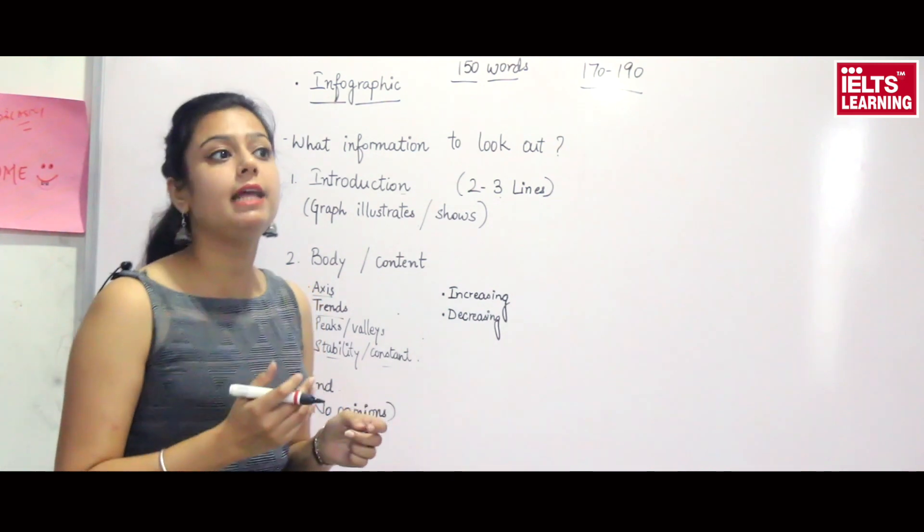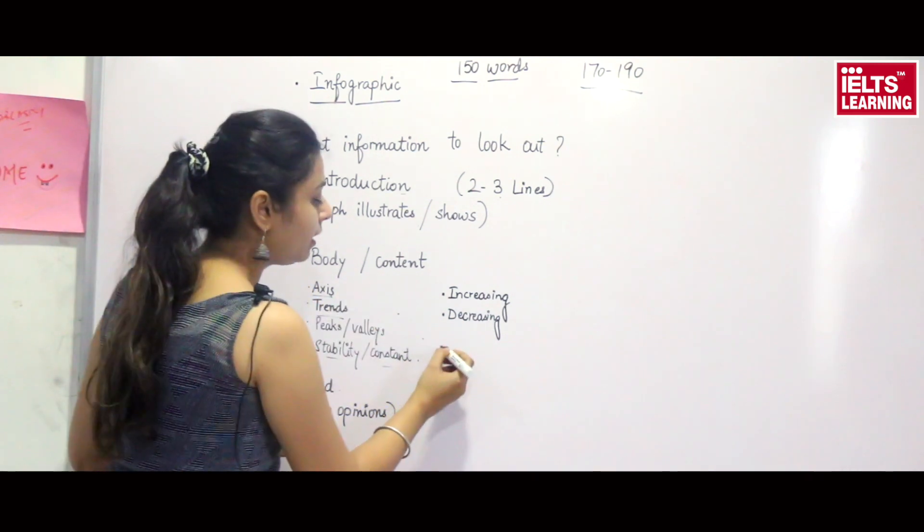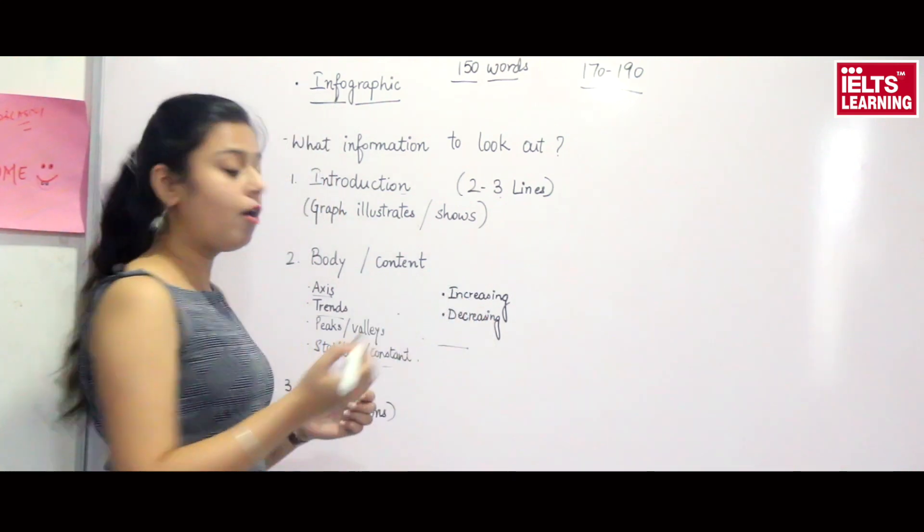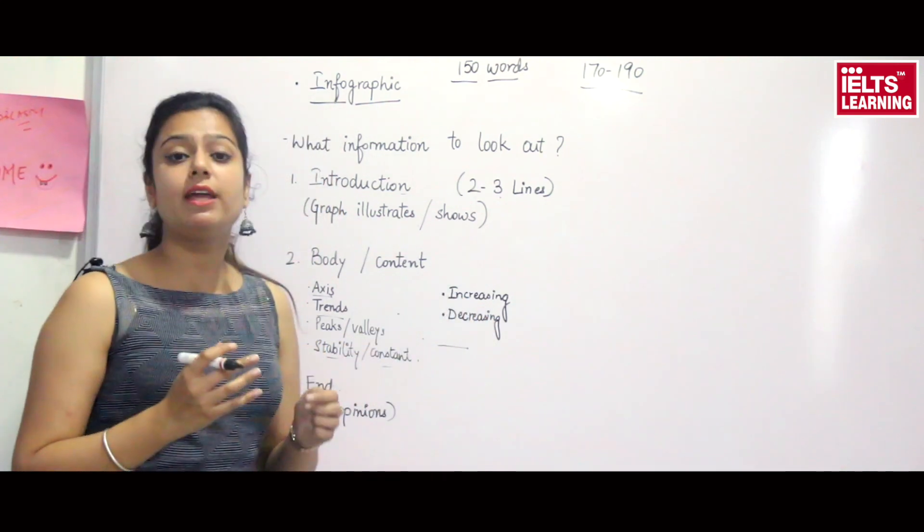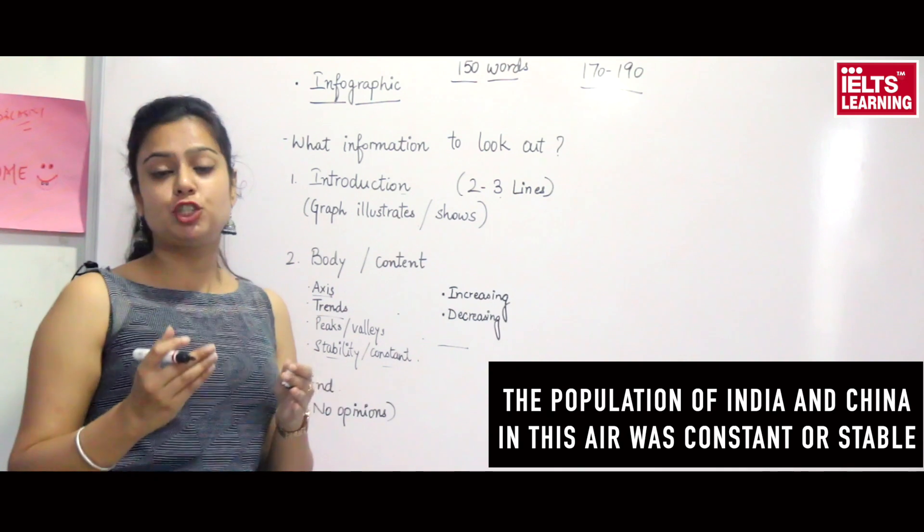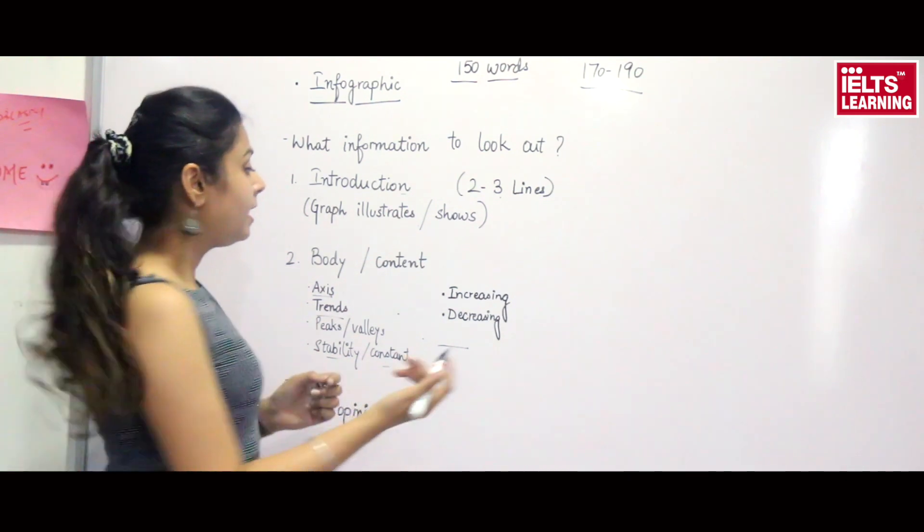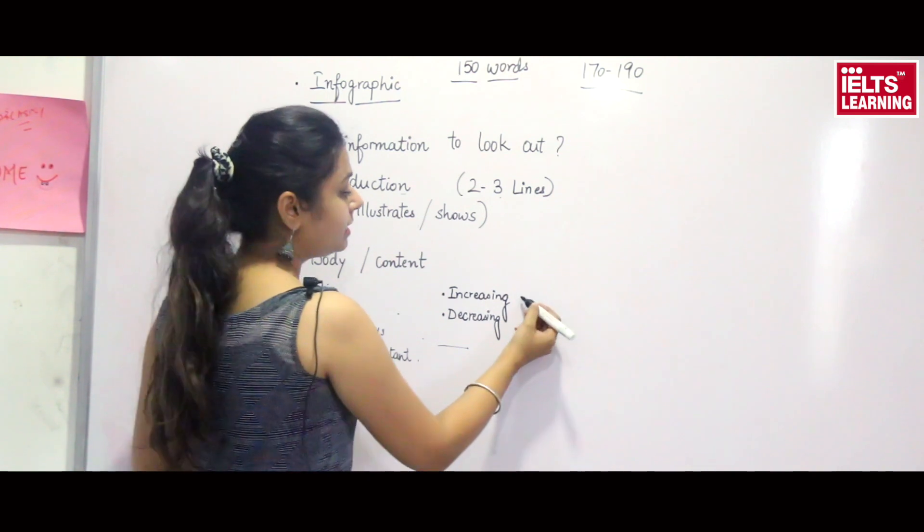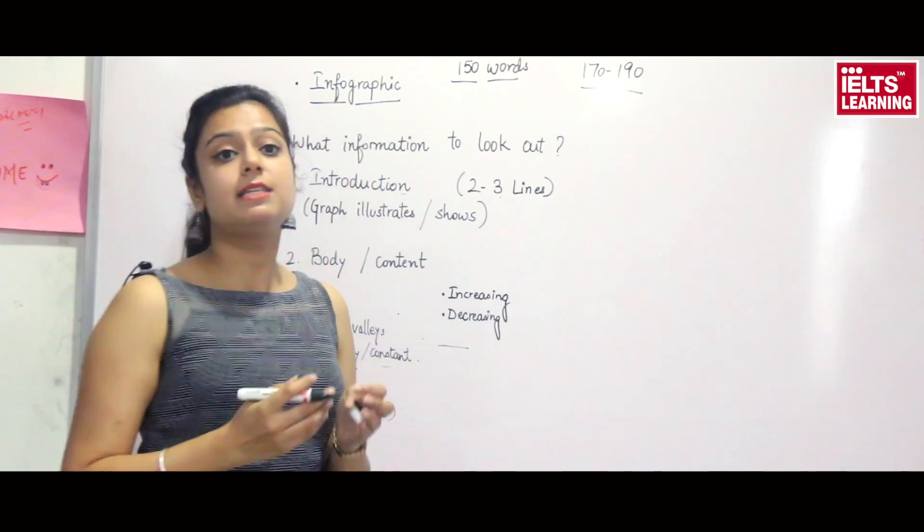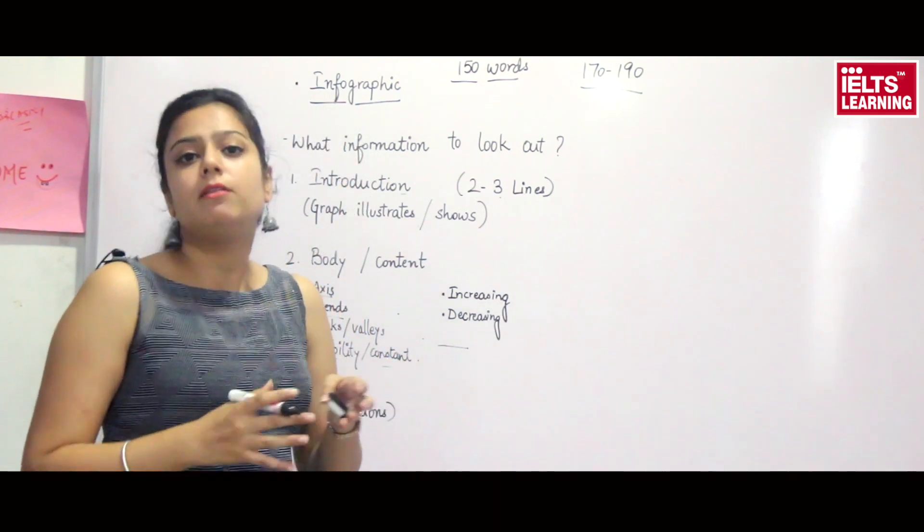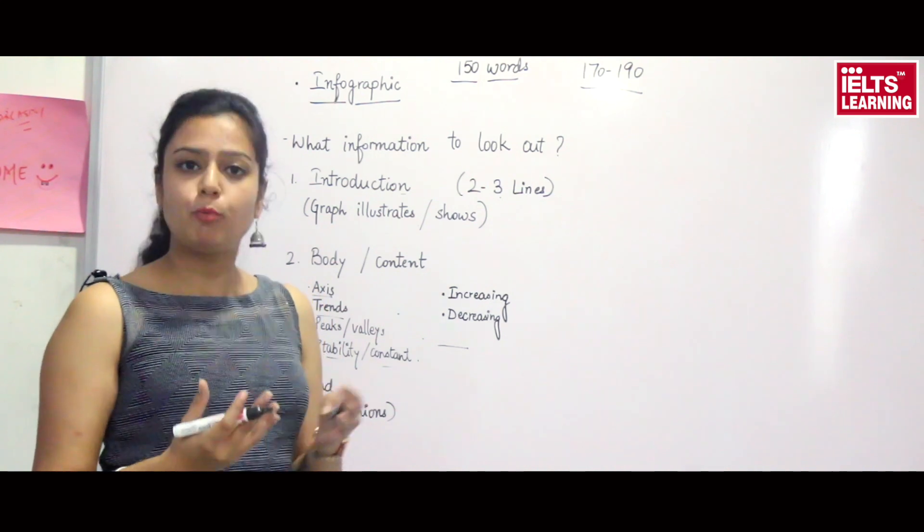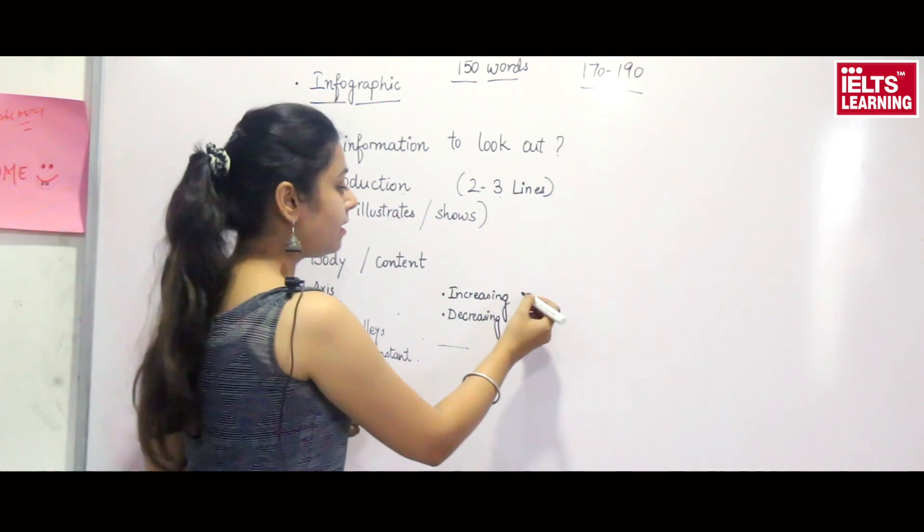Many times the information given is constant or stable, so you can explain it like the population of India or China in this year was constant or stable. Also, the information given may be increasing or decreasing - if I'm explaining about population, in this year the population was increasing, decreasing, or declining.